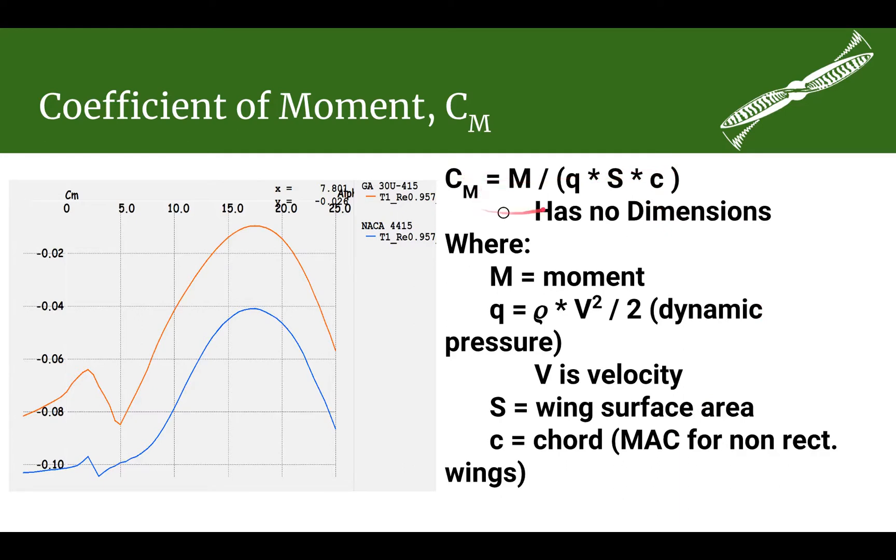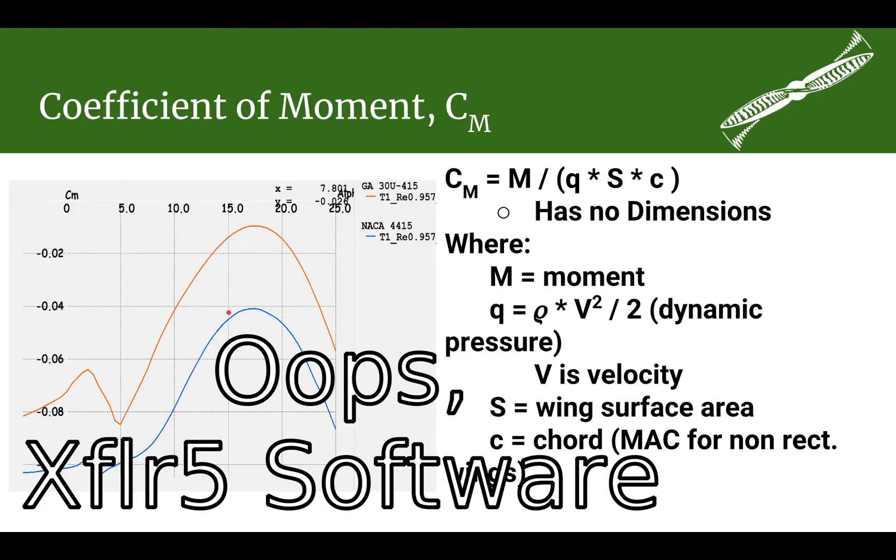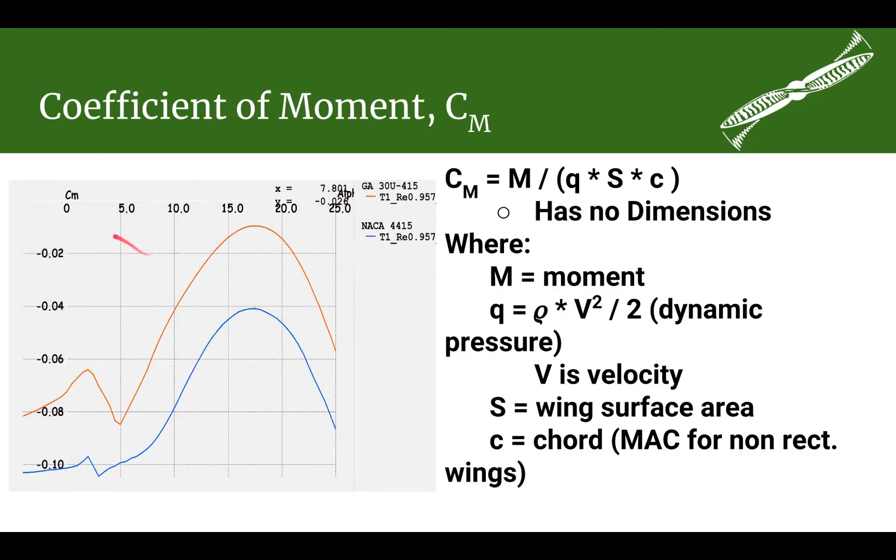And by the way, in the previous video, we talked about the mean aerodynamic chord. This is when we use our mean aerodynamic chord. We use it here for the chord when we're calculating our coefficient of moment. Now, we don't normally really have to calculate coefficient of moment. I'm just talking about how it can be calculated. Generally, we are given coefficient of moment for an airfoil. We don't have to go calculate it. And over here, I use the same program that I used showing the coefficient of pressure in an earlier slide. The XFLR5 program can give you a coefficient of moment versus angle of attack, and that's what we're looking at here.